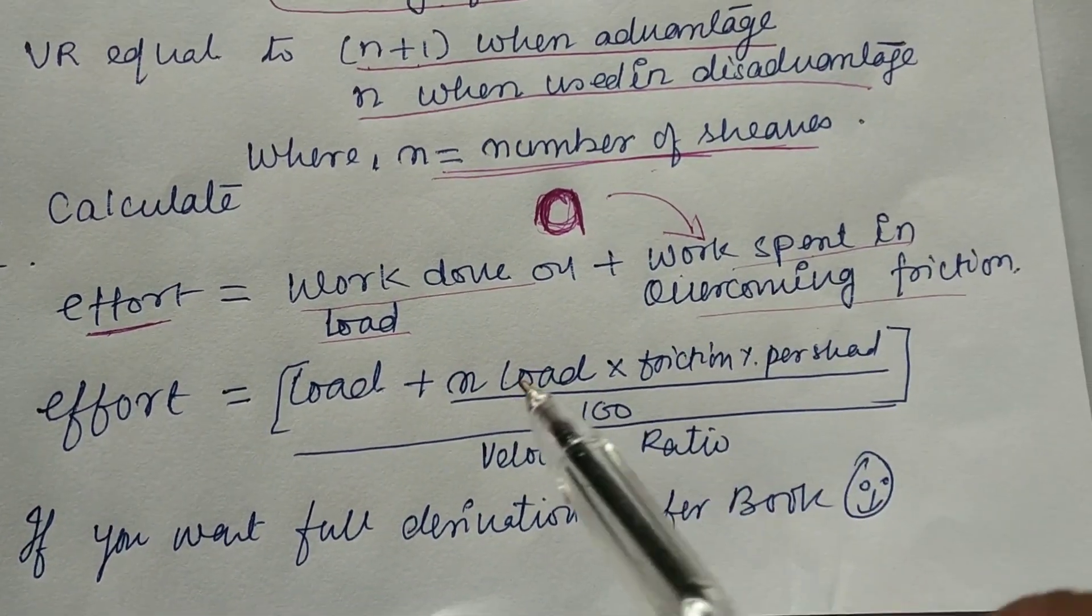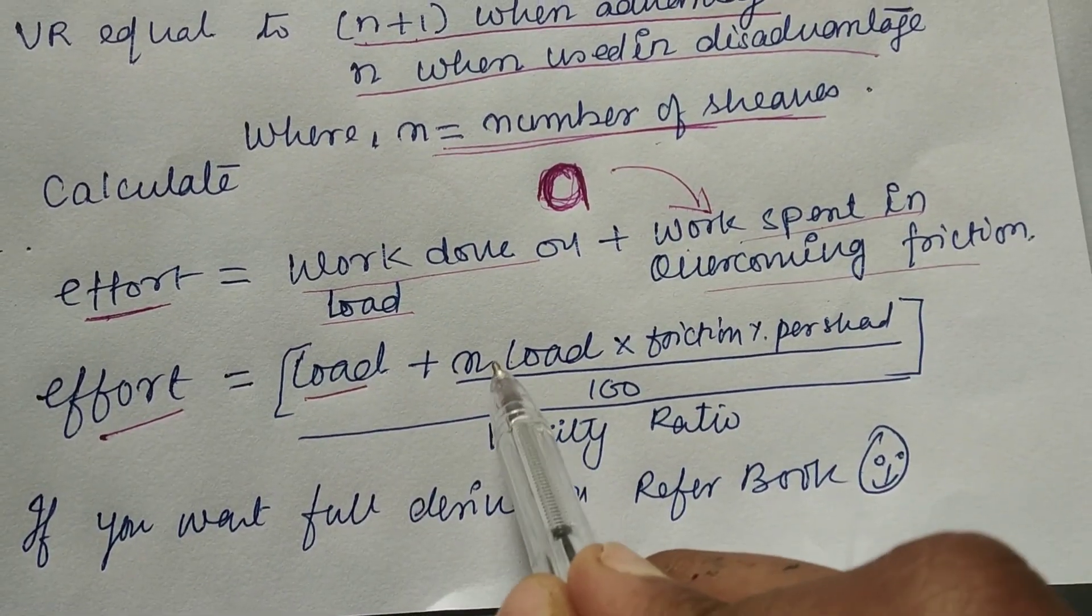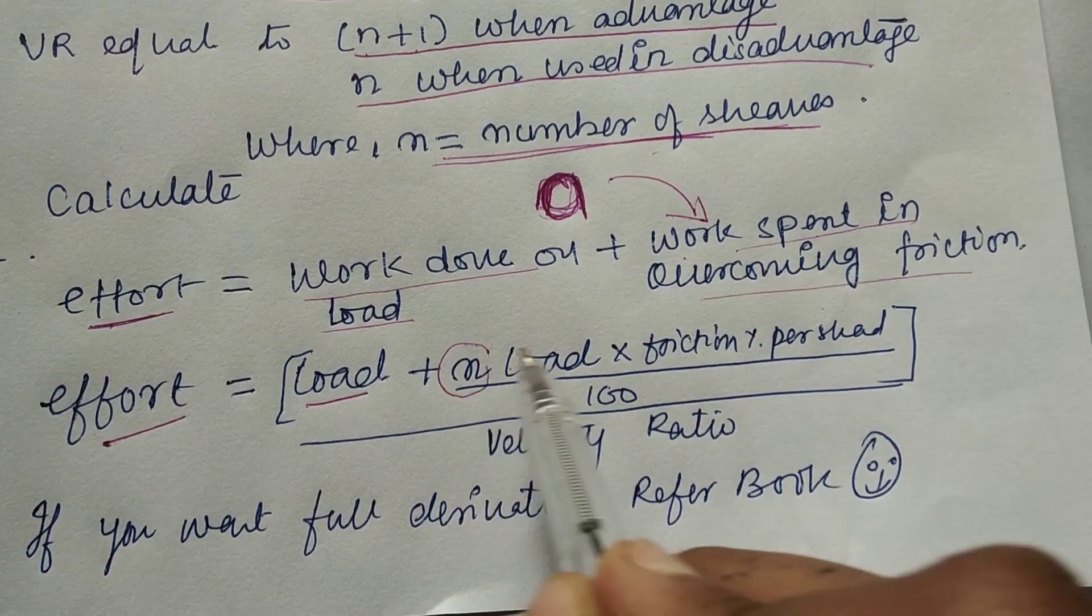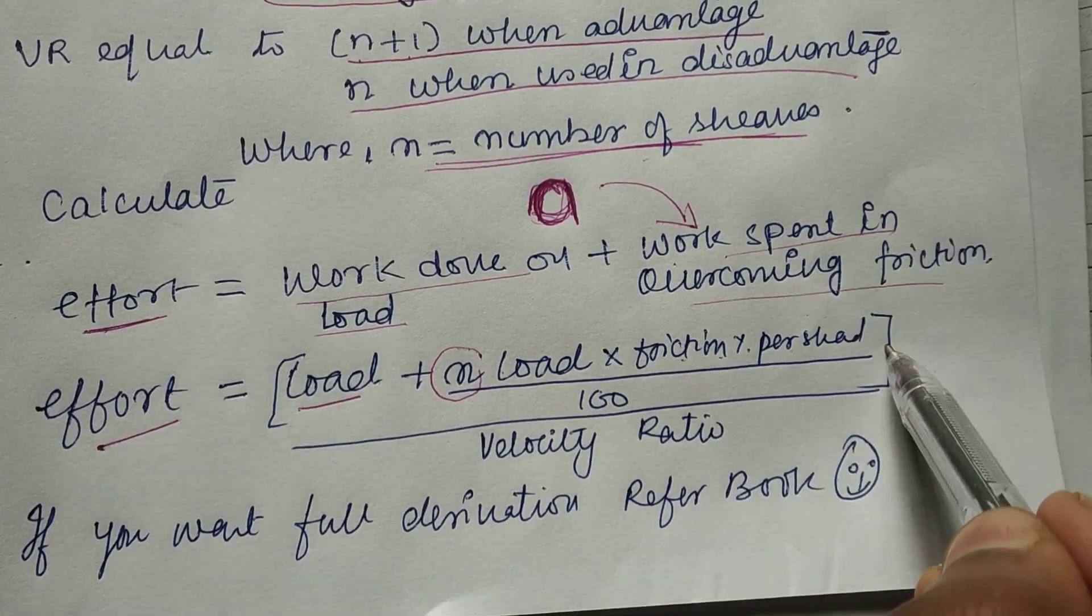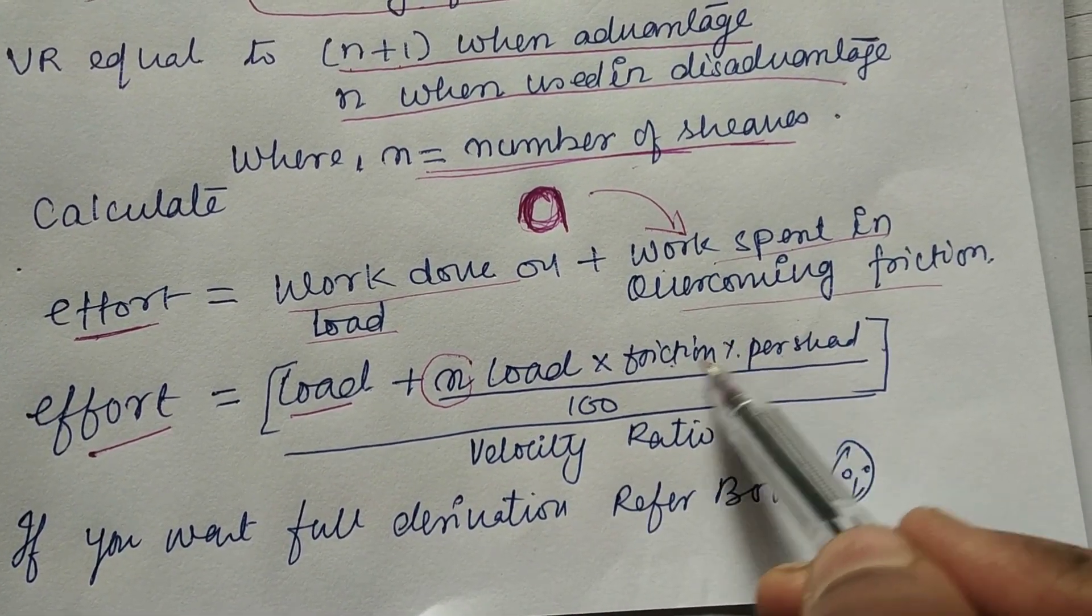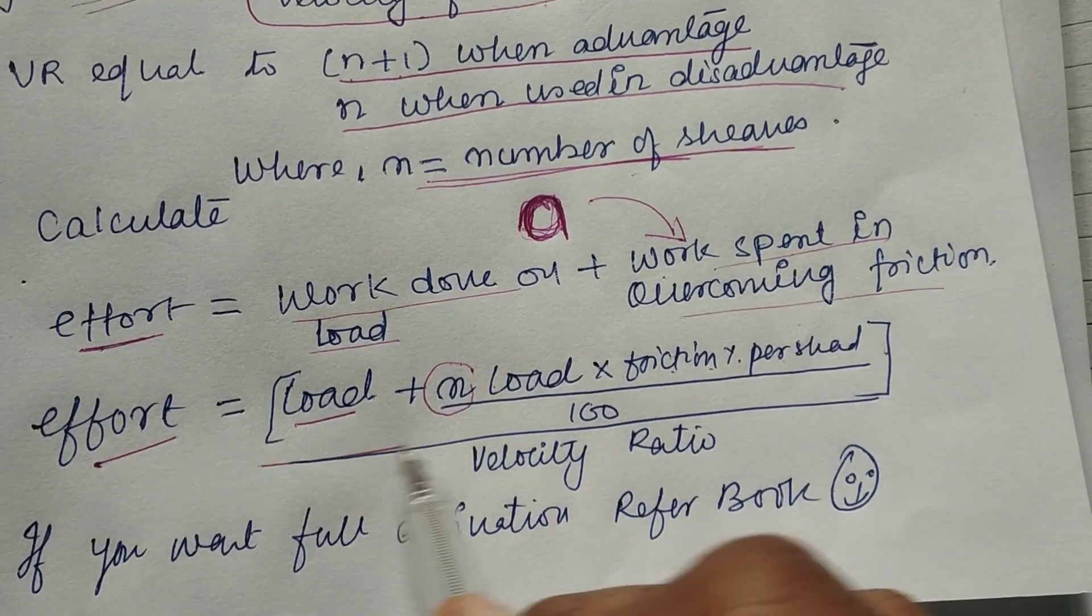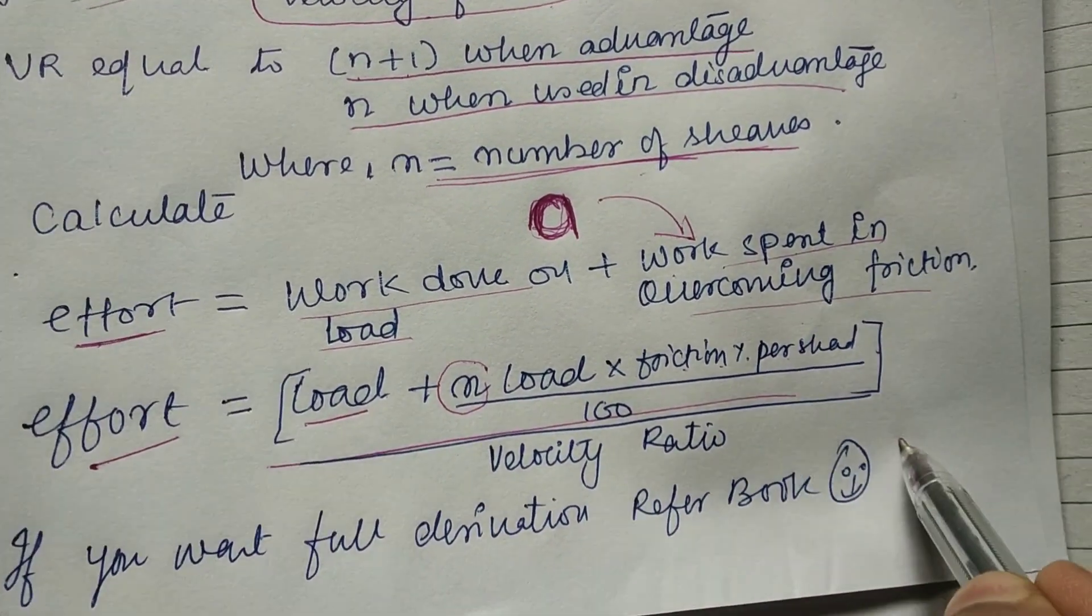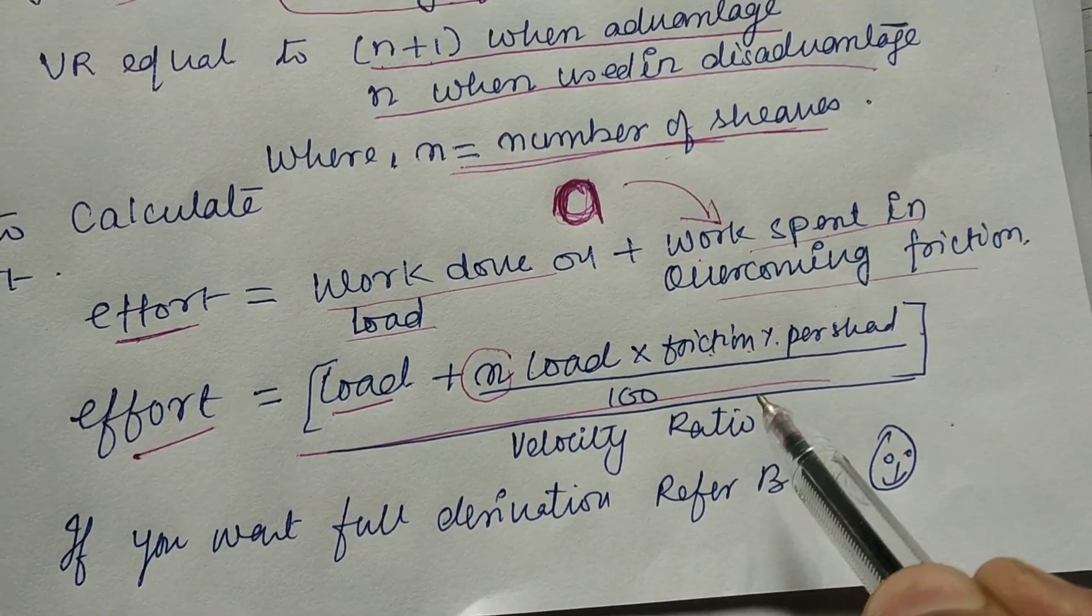The formula directly: effort equals [load + (n × load × friction percentage per sheave ÷ 100)] ÷ velocity ratio, where n is the number of sheaves. This is the formula you need to remember to find the effort.